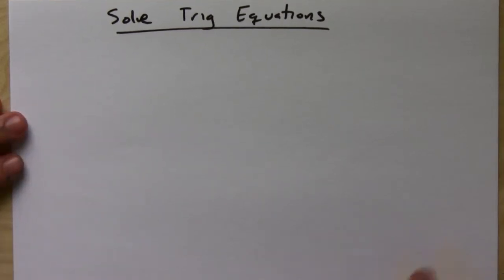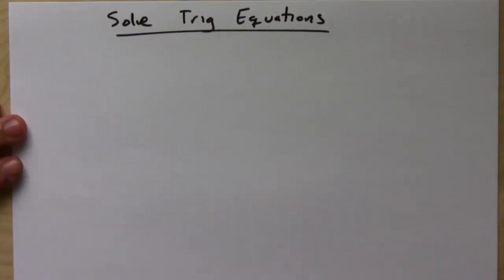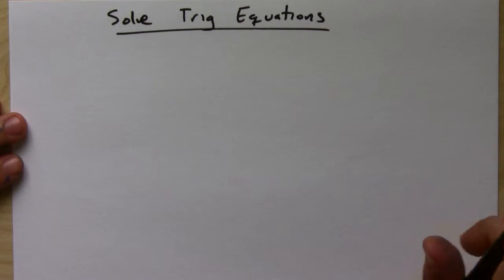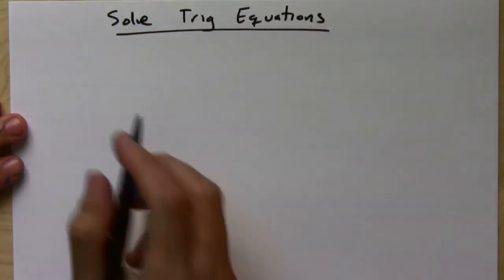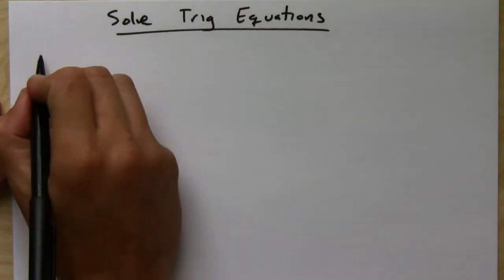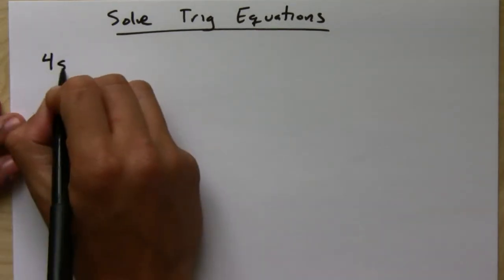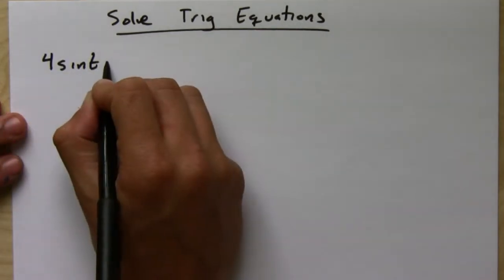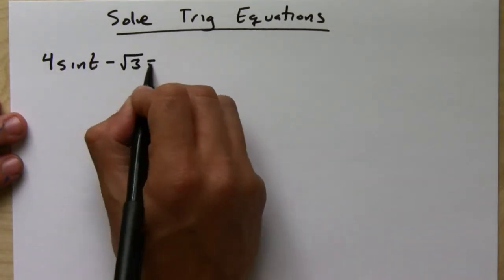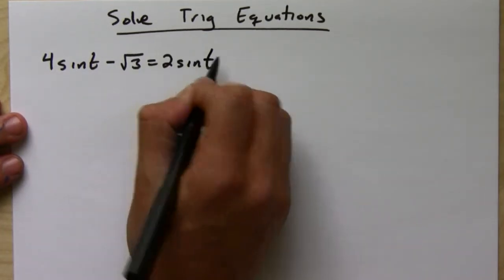Okay, so we're going to do a couple of examples on solving trig equations. And we're going to be doing these also quite a bit. So let's say we want to solve, for example, 4 sine t minus square root of 3 equals 2 sine of t.